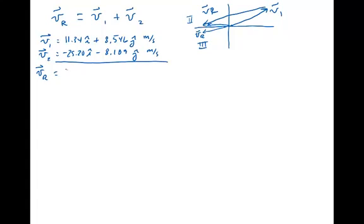Because what we're going to do is just add the i components and the j components together. So I add the i components I get a negative 13.86i. The j components negative positive 0.357j meters per second. So if I do my rounding to three significant figures here my v sub r in Cartesian notation would be a negative 13.9i plus 0.357j meters per second.